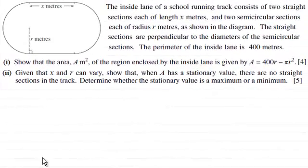Hi there. Now for this question, we're told that the inside lane of a school running track consists of two straight sections each of length x meters, and two semicircular sections each of radius r meters, as shown in the diagram. The straight sections are perpendicular to the diameters of the semicircular sections, and the perimeter of the inside lane is 400 meters.